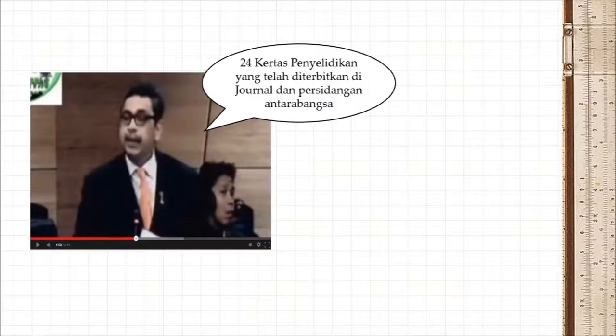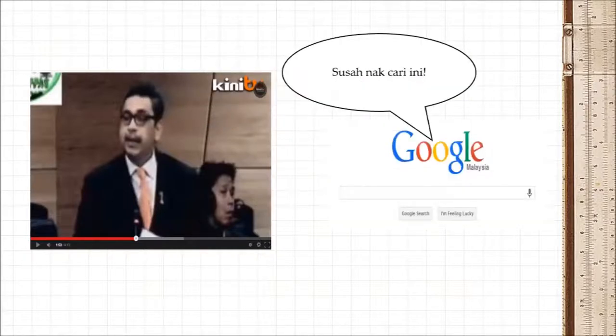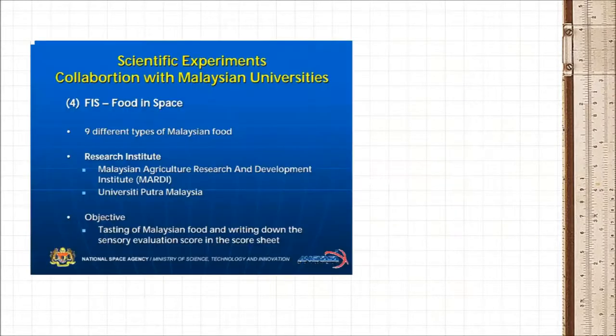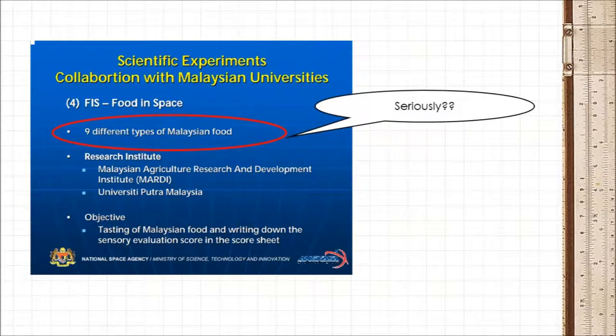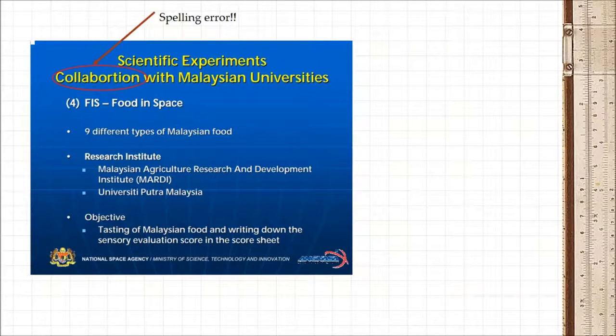Of course, the good minister will tell you that we've had 24 academic papers published as a result of the program. Now first of all, I couldn't find any of these mysteriously well-received papers on any of the Google searches I performed, including papers related to the Food in Space Experiment, which was meant to taste nine different Malaysian delicacies on board the ISS. Notice also that the word collaboration is wrongly spelled on the slide.